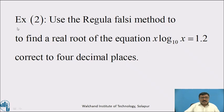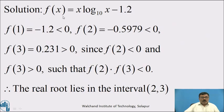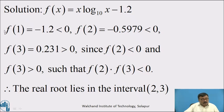Now, another example. Use the Regula Falsi method to find the root of the equation x·log₁₀(x) = 1.2, correct to 4 decimal places. Solution: Let f(x) = x·log₁₀(x) − 1.2. First, find the interval by putting x = 1, 2, 3, and so on, where the sign of f(x) changes from positive to negative or negative to positive.